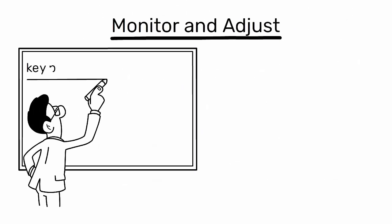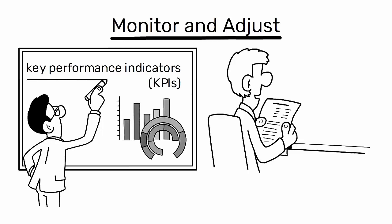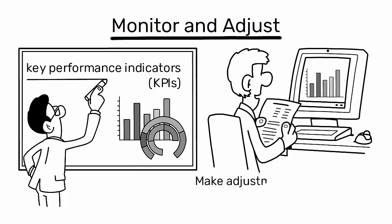Eighth, monitor and adjust. Establish key performance indicators (KPIs) to monitor the effectiveness of lean practices. Regularly review these metrics and make adjustments as needed to continuously improve the process.